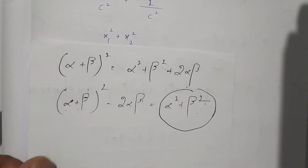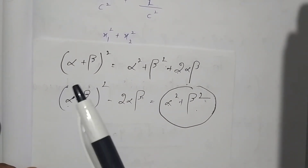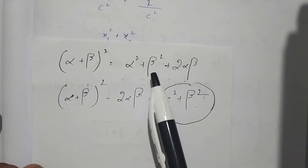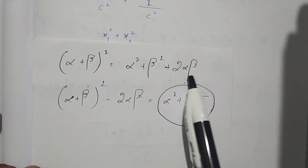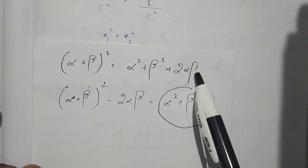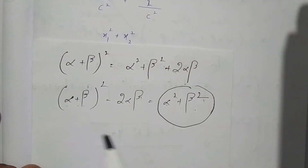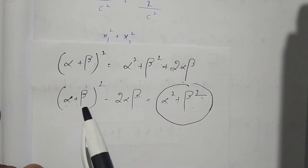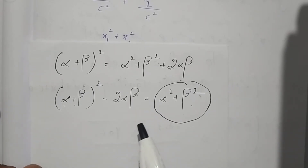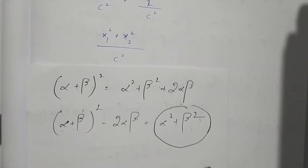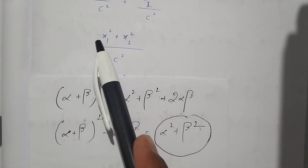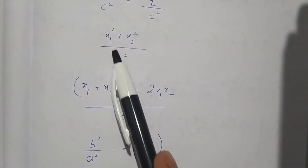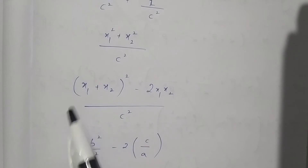As we know, (α + β)² = α² + β² + 2αβ. Sending 2αβ to the left side gives α² + β² = (α + β)² - 2αβ. Similarly, replacing α and β with x₁ and x₂, the value of x₁² + x₂² = (x₁ + x₂)² - 2x₁x₂.